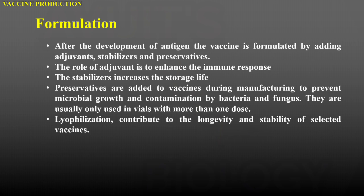The next step is formulation. After the development of the antigen, the vaccine is formulated by adding adjuvants, stabilizers, and preservatives. The role of adjuvants is to enhance the immune response. The stabilizers increase the storage life. The preservatives are added to vaccines during manufacturing to prevent microbial growth and contamination by bacteria and fungi; they are usually only used in vials with more than one dose. Lyophilization also contributes to the longevity and stability of selected vaccines.